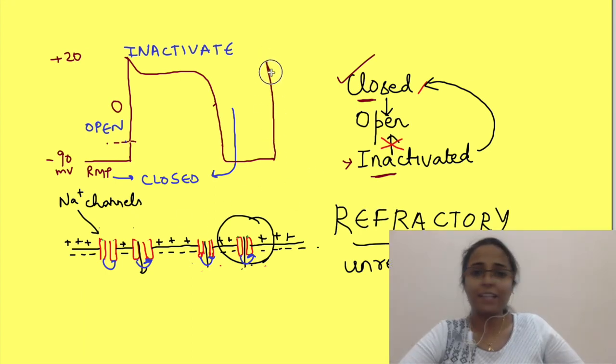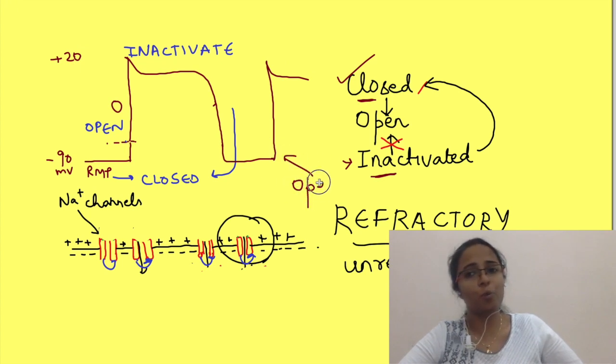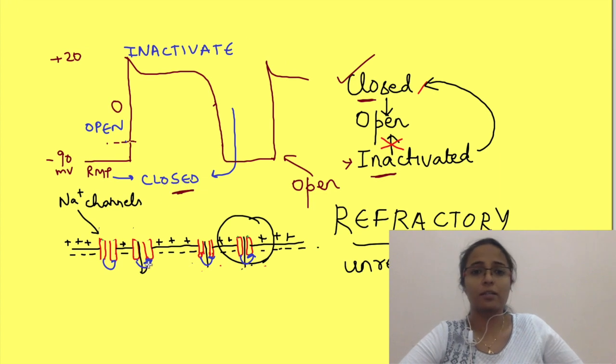See, for next action potential to happen, we want channels to open and channels can only open from closed state. So, during the time the channels are inactivated, even if another stimulus comes, these channels cannot open. So, the new stimulus is basically ineffective.